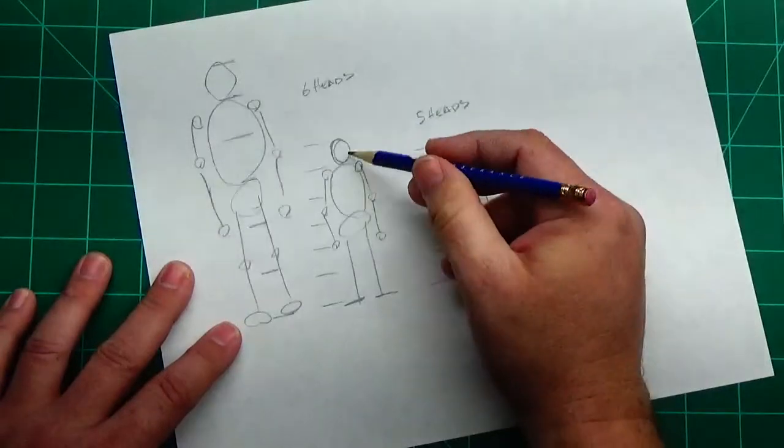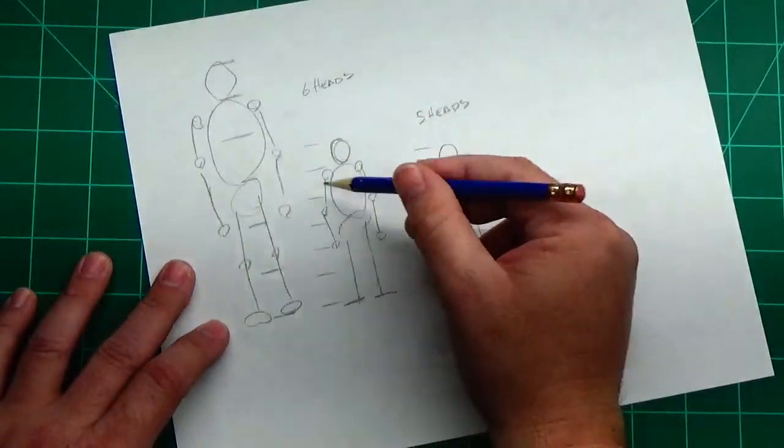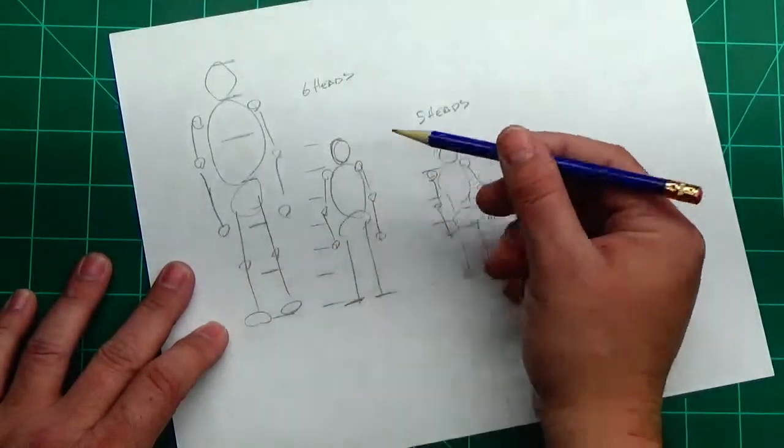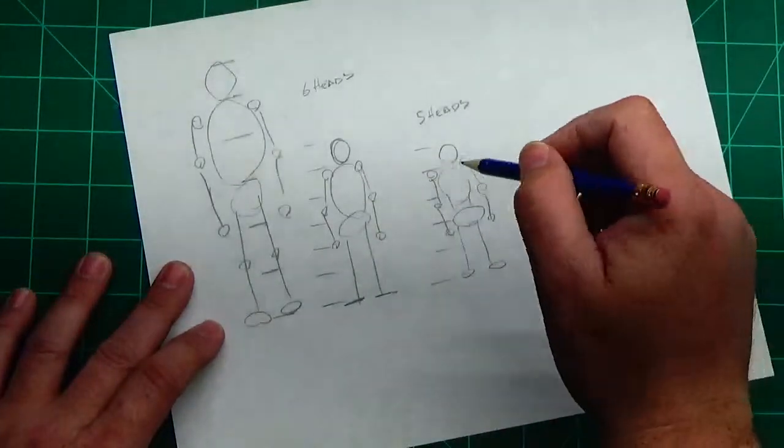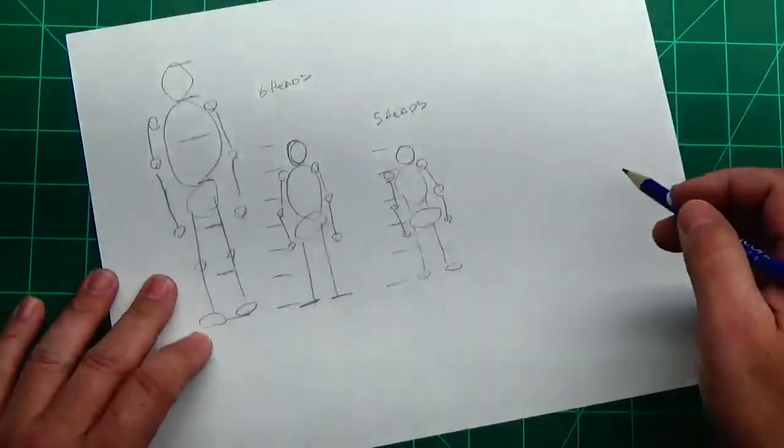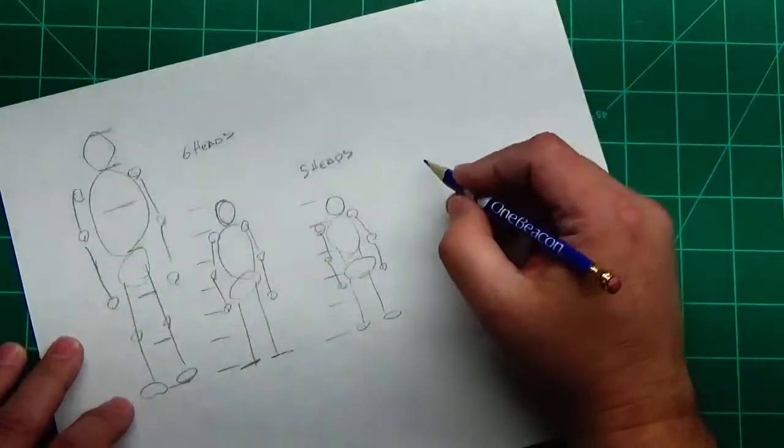So if you wanted to shrink down a person to make it, you know, like an adult and a kid, you can do it just the same way. Shrink the size of their heads. However, there's different rules for kids than there are for dwarves. Dwarves are going to be somewhat proportioned. For kids, the head is actually bigger.